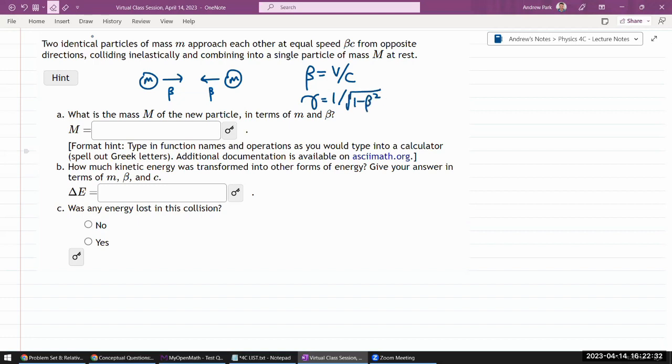So colliding inelastically, after collision there will become some blob of mass M. Okay, it asks, what is the mass M of the new particle in terms of M and beta? The non-relativistic answer would have been 2M. Now here, that's not the case because it's relativistic.